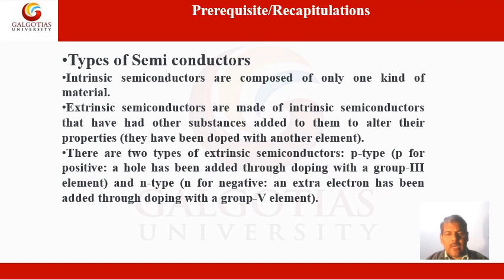Extrinsic semiconductors are made from intrinsic semiconductors that have had other substances added to alter their properties — they have been doped with another element. There are two types of extrinsic semiconductors: P-type (P for positive), where a hole has been added through doping with a group-three element into a group-four element; and N-type (N for negative), where an extra electron has been added through doping with a group-five element into a group-four element.